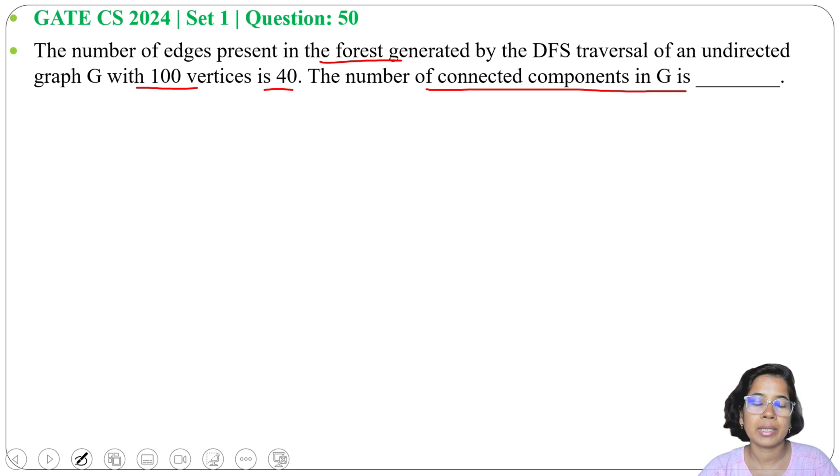So how many connected components are present? Let's take an example. Suppose this is a graph A, B, C, D. We have 4 vertices, this is a graph. Now if we draw its DFS, then A to B, B to C, C to D, right? So there are 4 vertices and 3 edges.